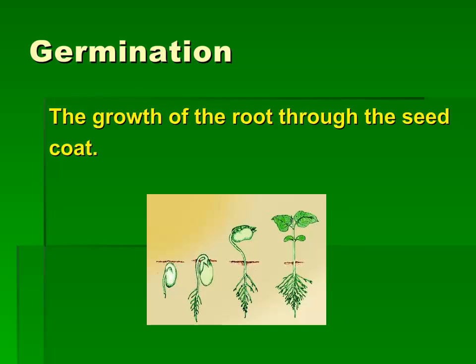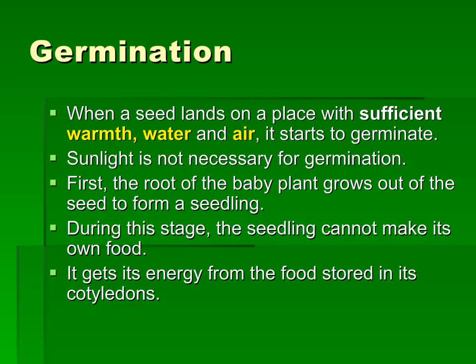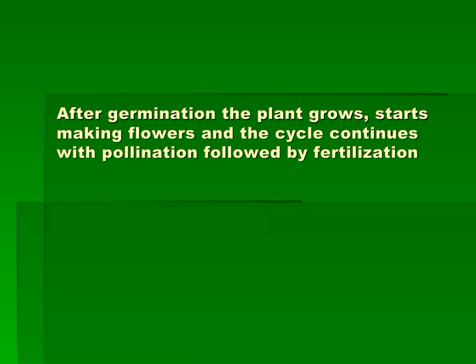Germination is the process of baby plants growing from seeds. For a seed to germinate, it needs warmth, water, and air. It does not need sunlight for germination. After germination, the plant grows, it starts making flowers, and the cycle again continues with pollination followed by fertilization and again from the seed germination.